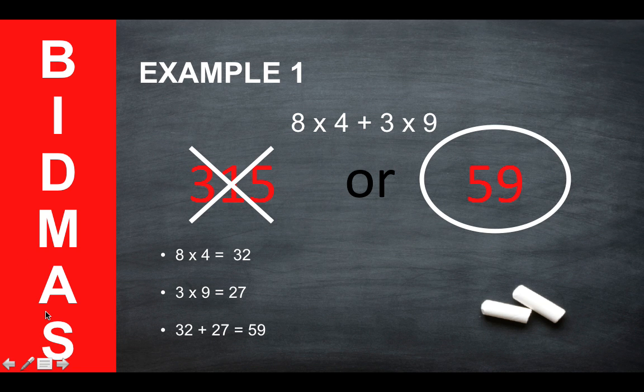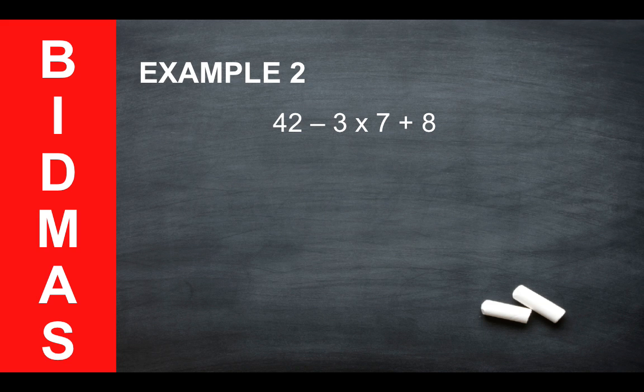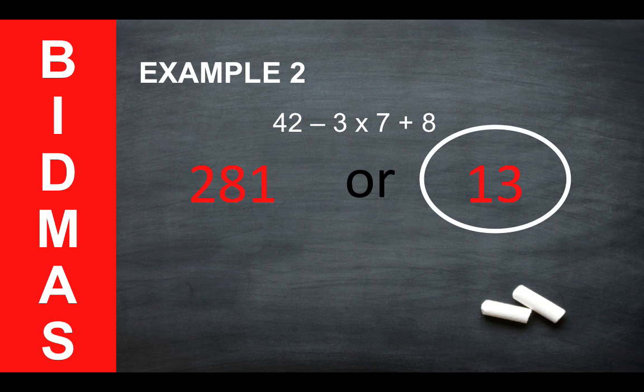Let's have a look at another example. Here we have 42 minus 3 times 7 plus 8. The two possible answers are 281 or 13. Again, using BIDMAS, the correct answer would be 13.